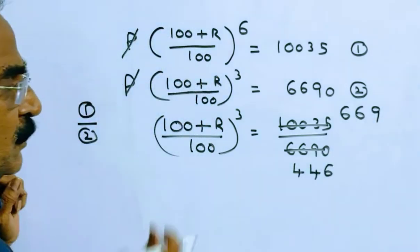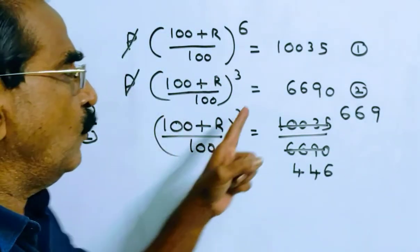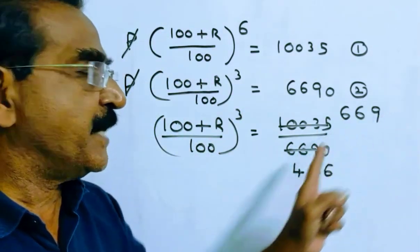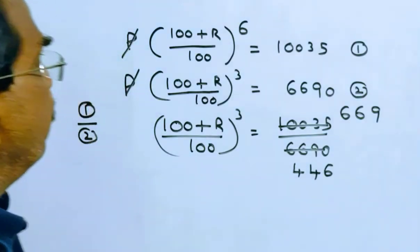So 100 plus R by 100 whole cube is equal to 669 by 446.